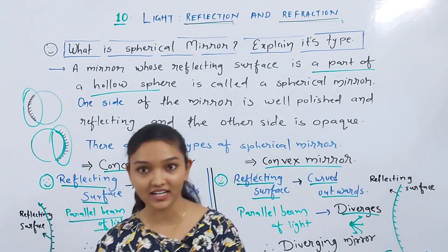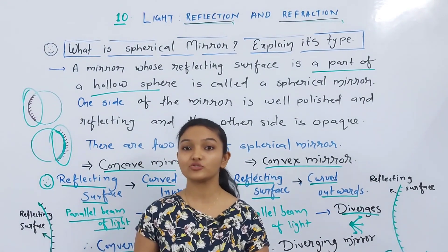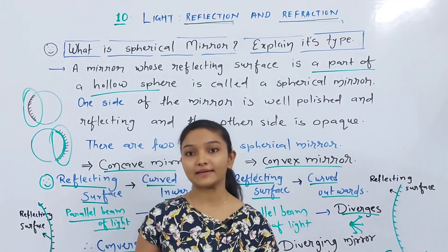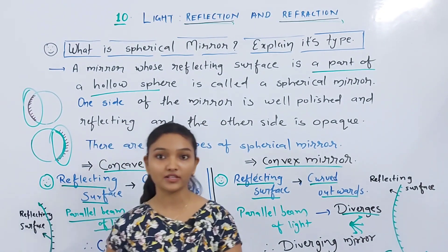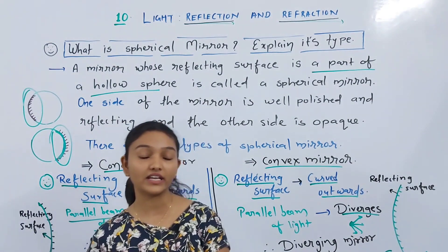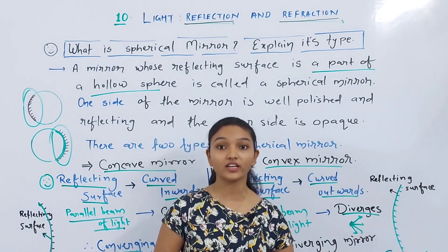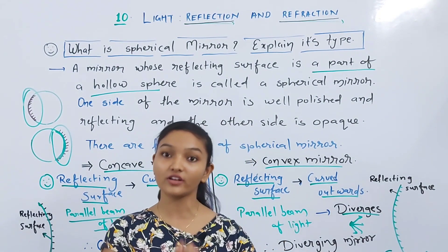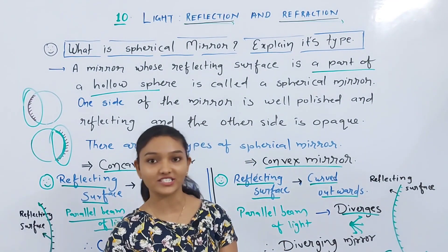In today's video, we have seen what is a spherical mirror and its two types — the first type was concave mirror and the second was convex mirror. We also saw a memory trick for how to remember each one. Thanks for watching.